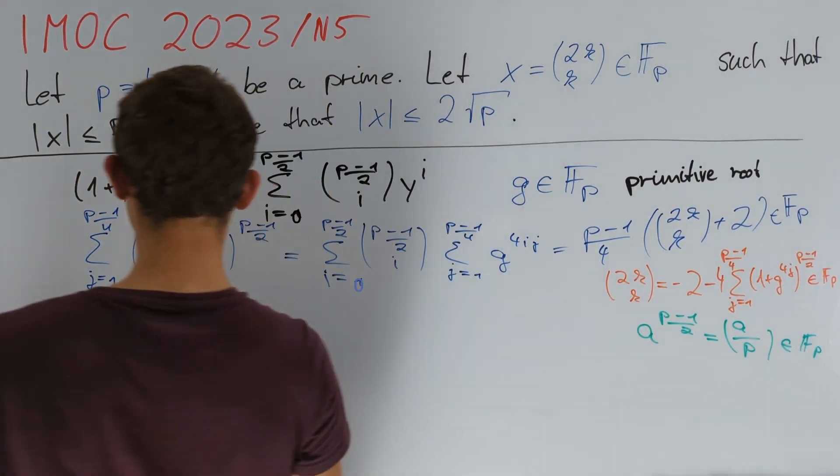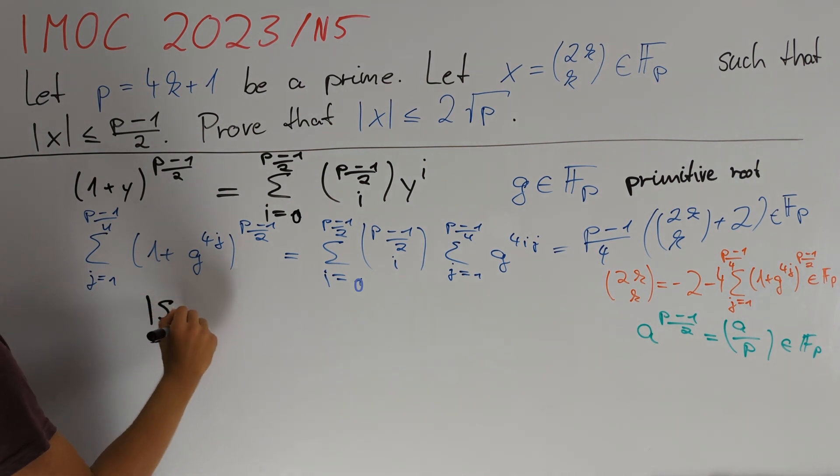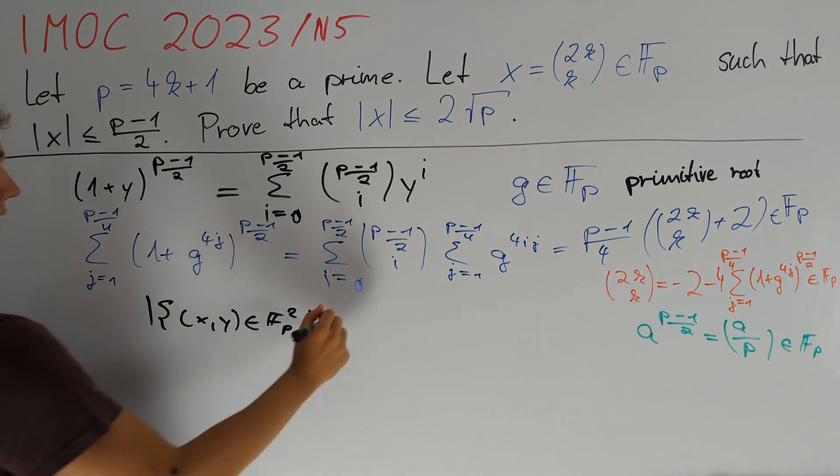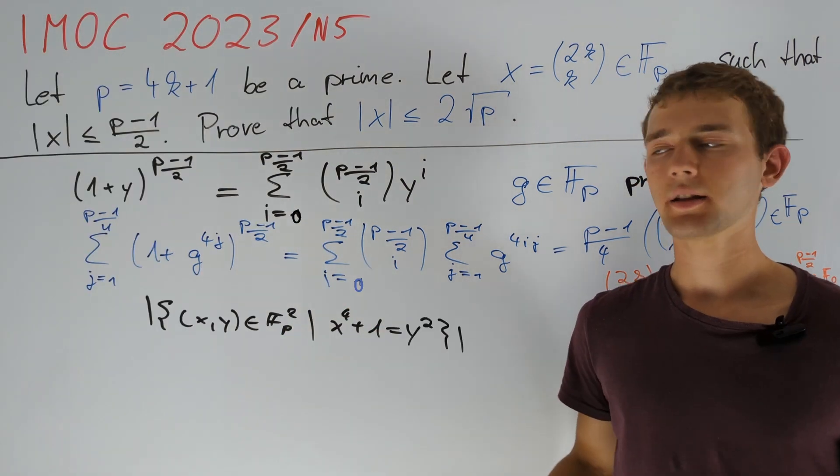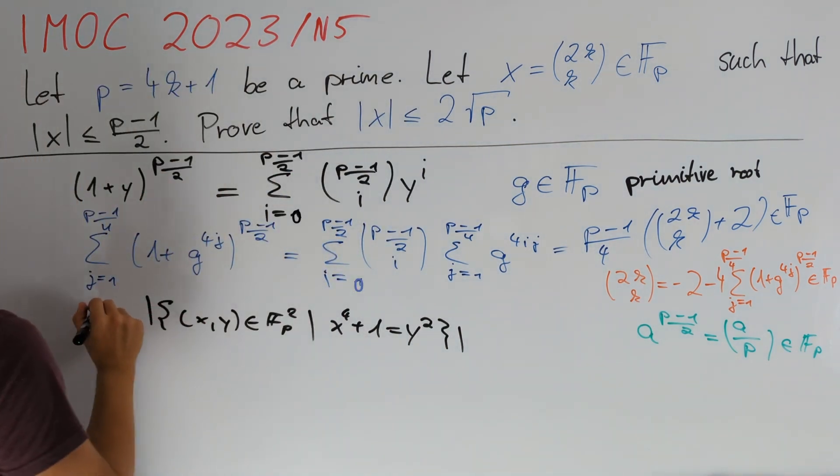That is why we want to consider the number of pairs x, y both in Fp such that x^4 + 1 equals y^2. I denote this quantity with n1.